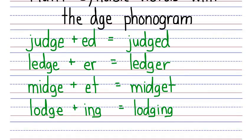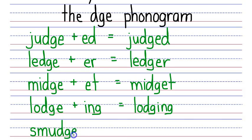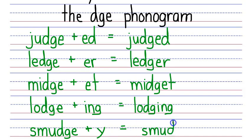The last combination is the syllable smudge plus the syllable E — spelled with a Y — to make smudgy. Let's write smudge: S, M, U making the short U sound, and DGE that says J — smudge. Plus the syllable E spelled with a Y that says E. You combine those by removing the silent final E: S, M, U, D, G, Y — smudgy.